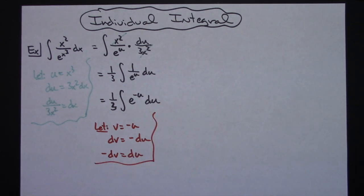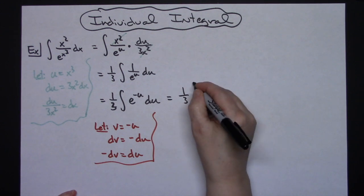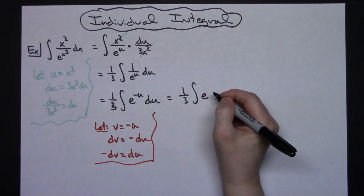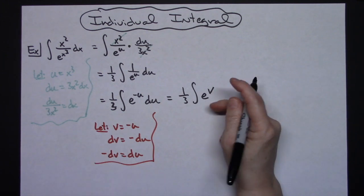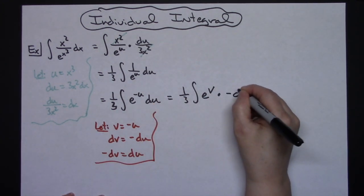So then I'm going to come back up here and I'm going to make some more substitutions. So I'll have the 1 third out in front. The integral will have e to the v, and then substituting my du for a negative dv.